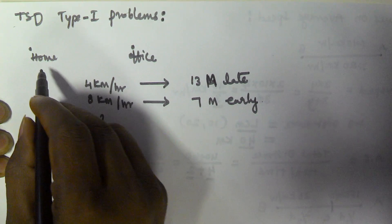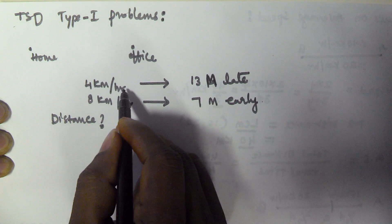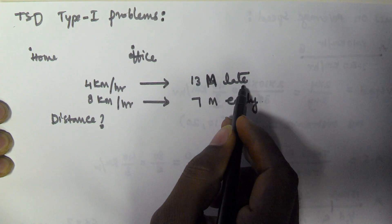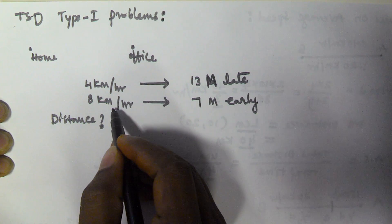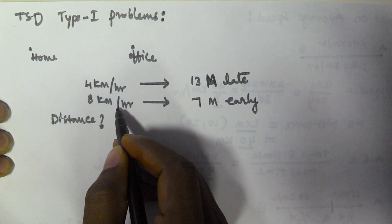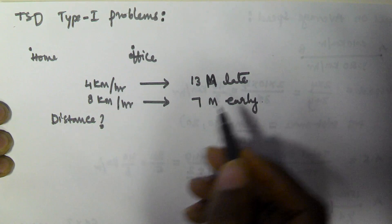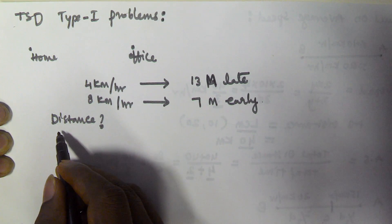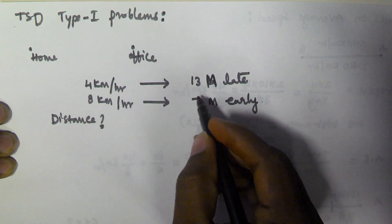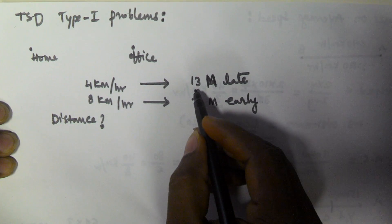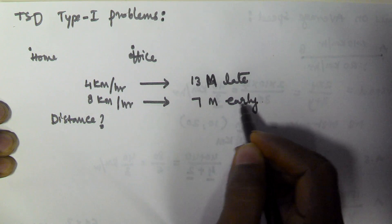On the first day, a person travelled from his home to office with 4 km per hour and reached 13 minutes late. On the next day, he travelled at 8 km per hour and reached 7 minutes early. He reached 13 minutes late and 7 minutes early.